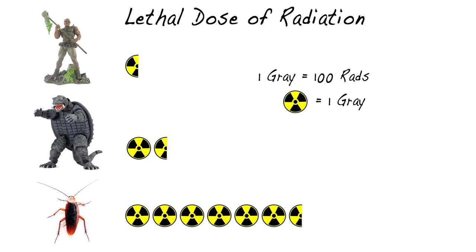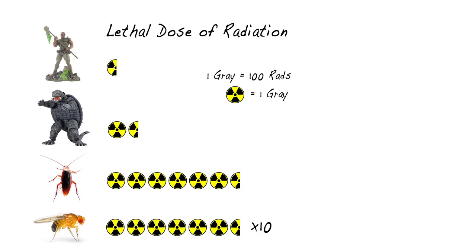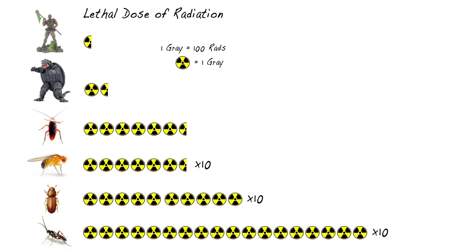A tortoise can take up to 15 gray. The cockroach, 64. But despite their reputation for being these incredible survivors of nuclear holocausts, they're really not that tough. Plenty of insects have them beat.